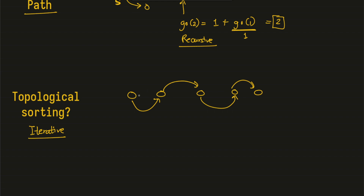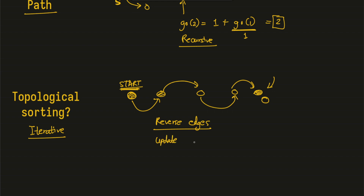To update the answer for a starting node, we need to know the answer for subsequent nodes first. This means we need the answer for the rightmost node, which is zero. We then essentially reverse the edges and update the answer for neighbors. These are the two key steps for the iterative topological sorting approach. The top-down approach simply uses a recursive function.